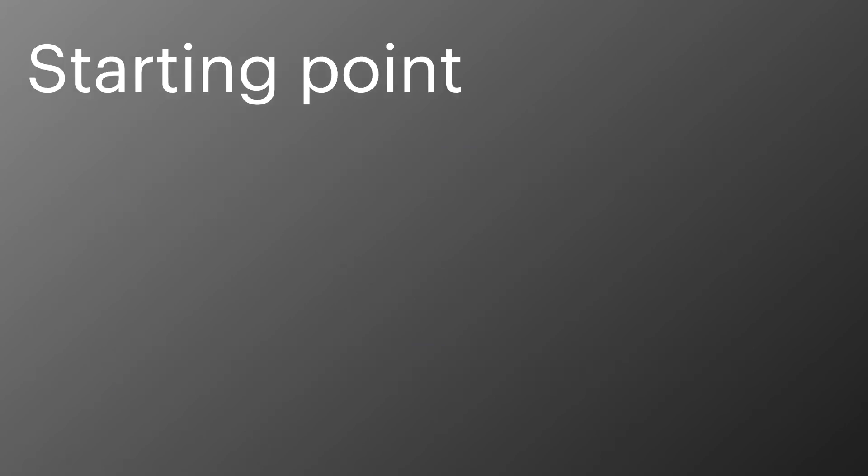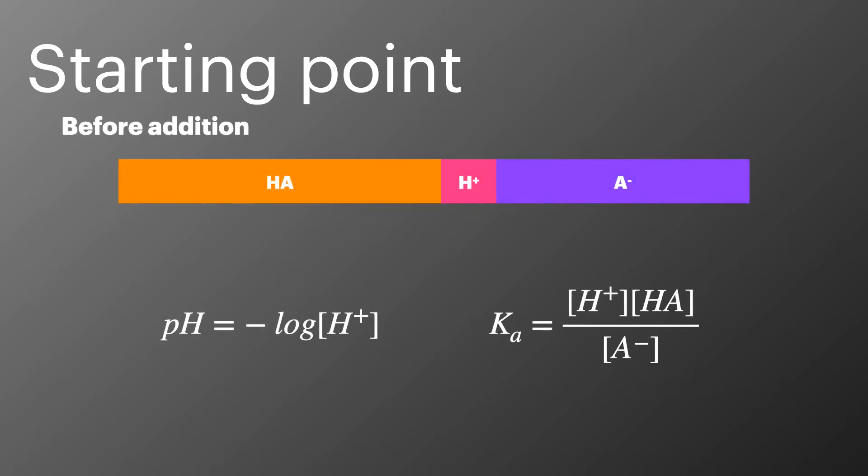Just like we did for the addition of H+, we need to work out the concentrations of HA and A- at equilibrium before we add the base. This is covered in the video on finding the pH of the buffer, but essentially we use the two equations here to establish our starting concentrations.